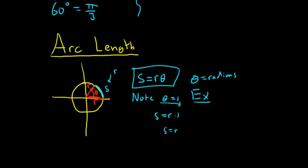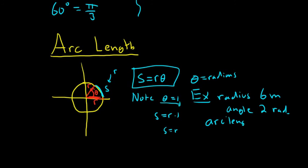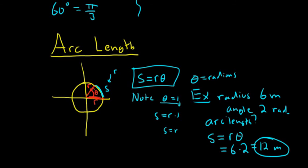We're told that the radius is 6 meters and that our angle is 2 radians, and we're going to find the arc length. Very easy: s equals r theta, so r is 6 and the angle is 2, so you get 12 meters. That's how you find the arc length — just carefully plug in the numbers and you're good to go.